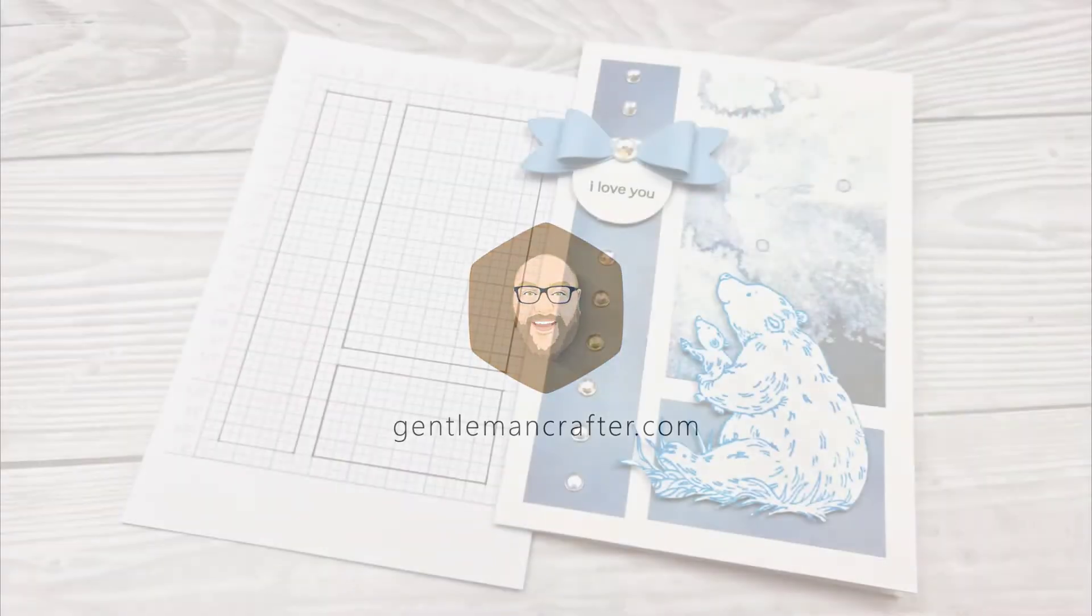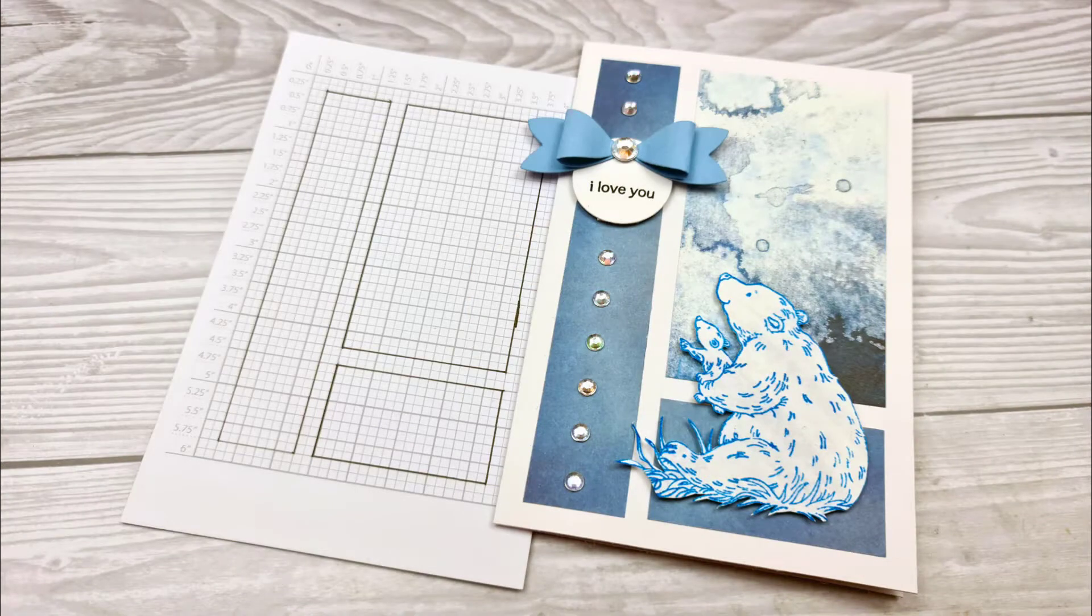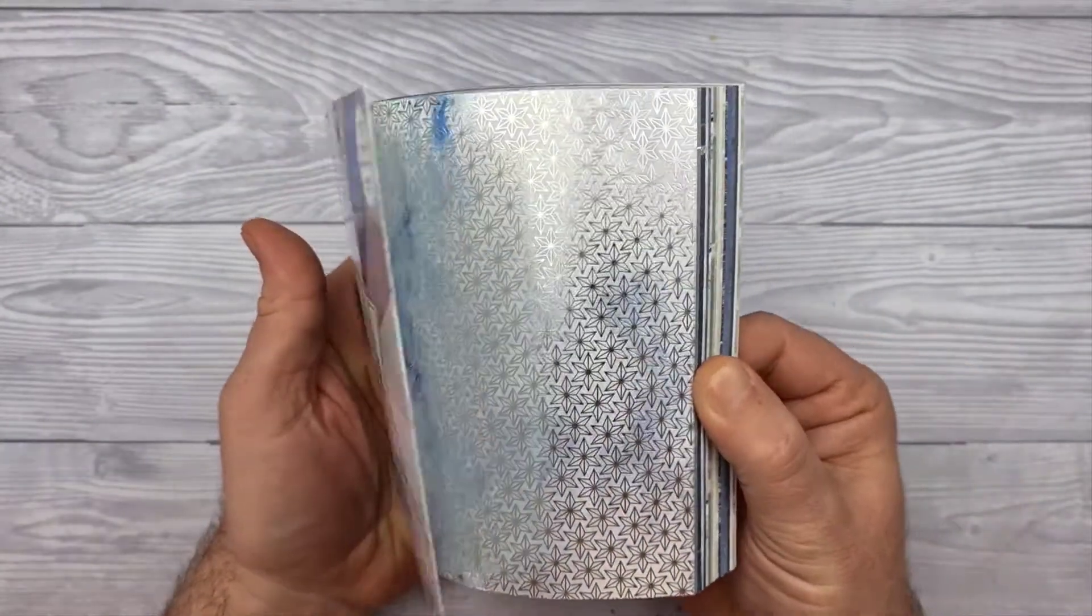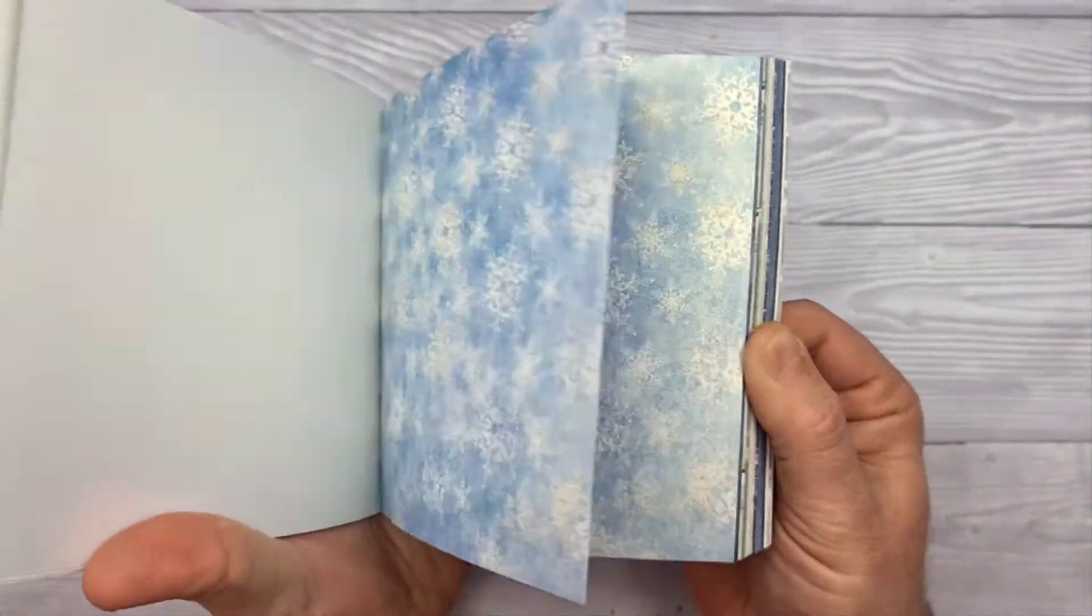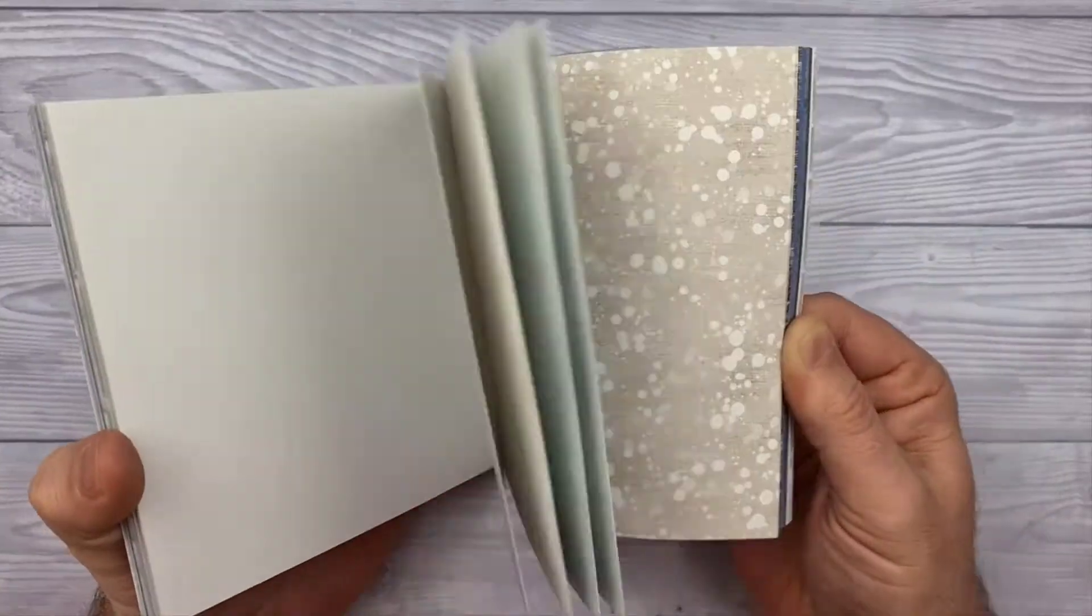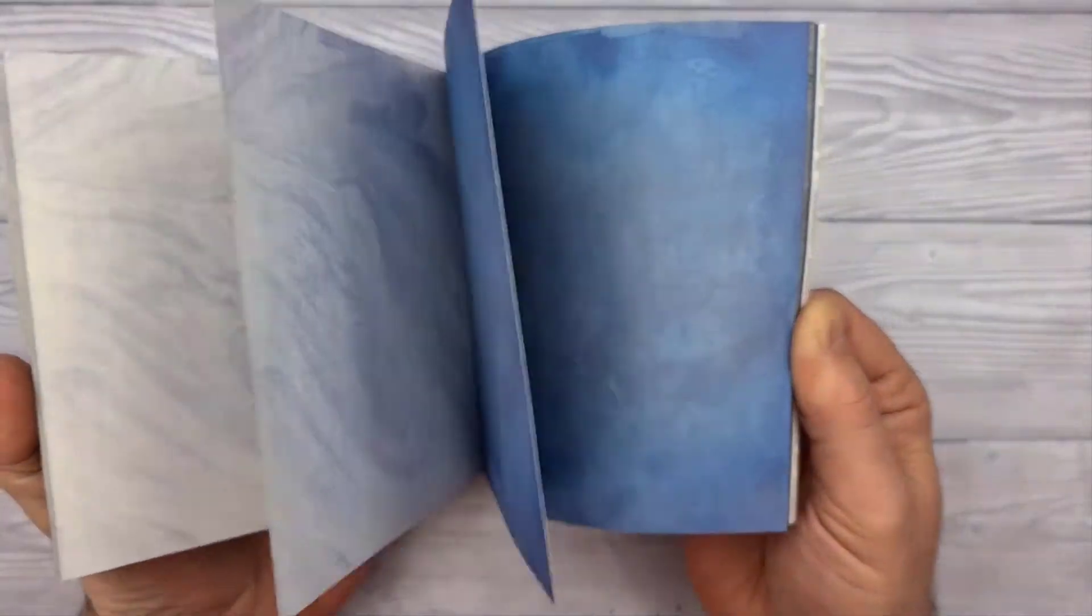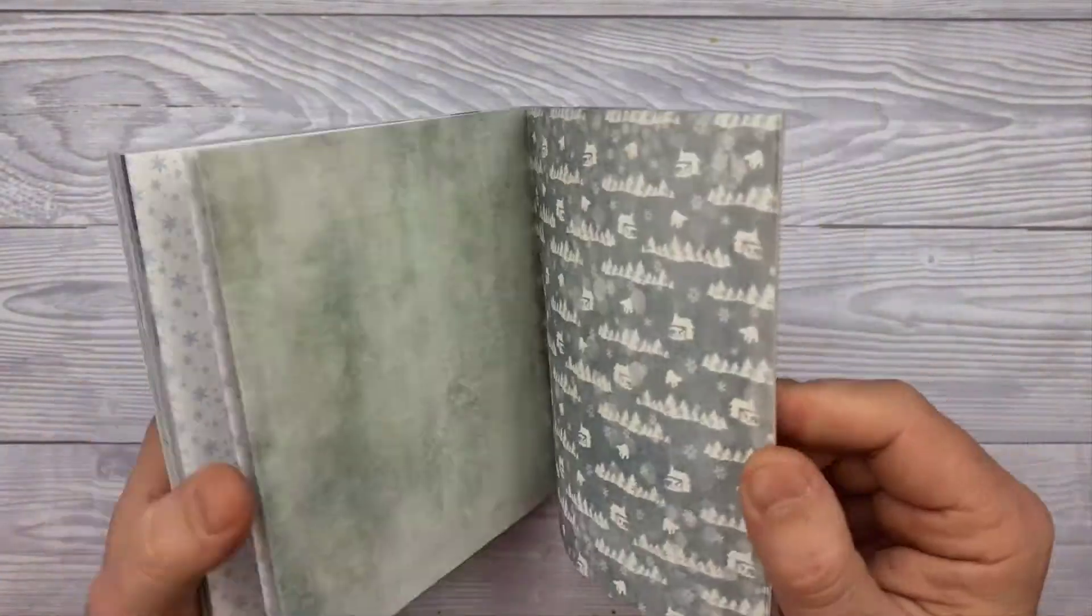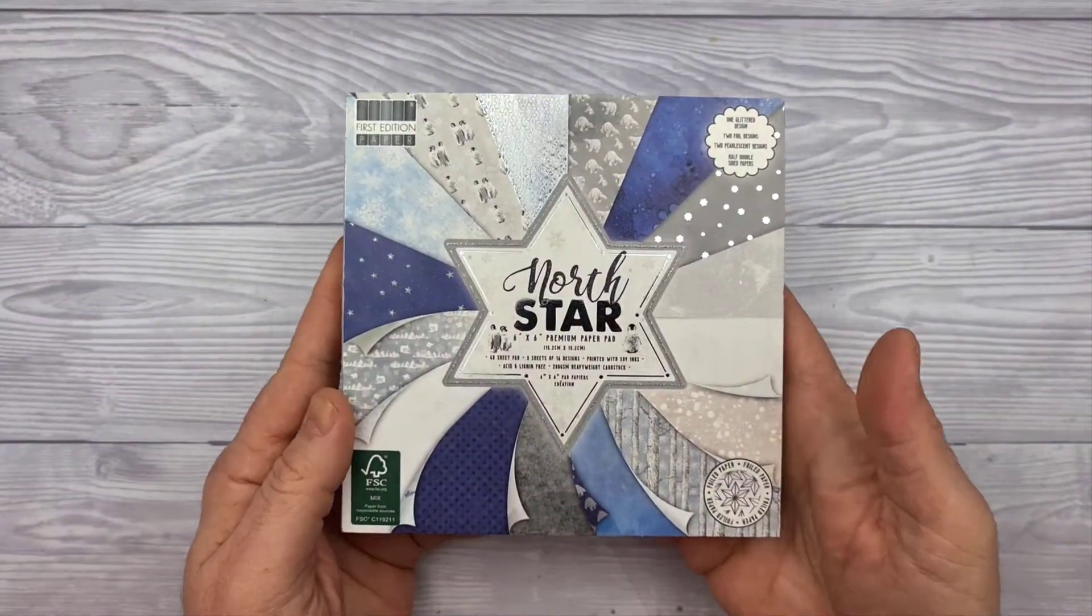It is yet another card layout for you, number 74 this time, and I've gone for a very blue theme today. The papers are coming from the North Star pad from 1st Edition, a nice 6x6 collection, but I believe they also do it in 8x8 and 12x12, so whatever size you're working at, hopefully you should be able to find a pattern that suits.